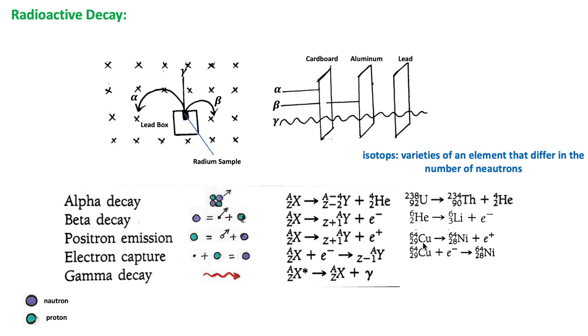This unstable copper isotope can decay to nickel through positron emission. It also can decay to nickel through electron capture.